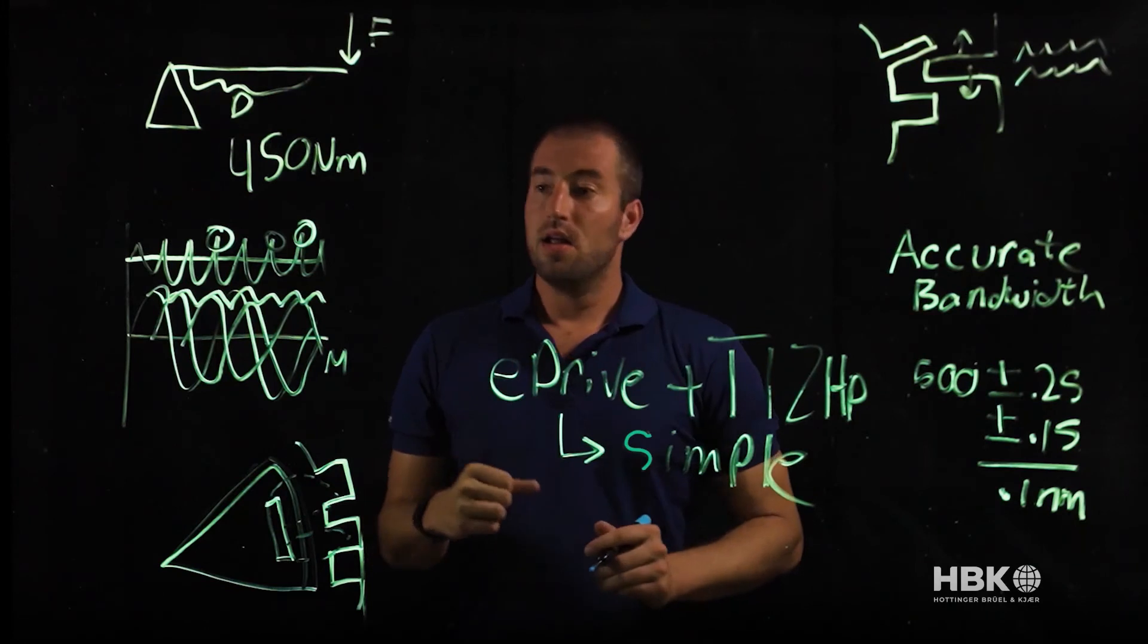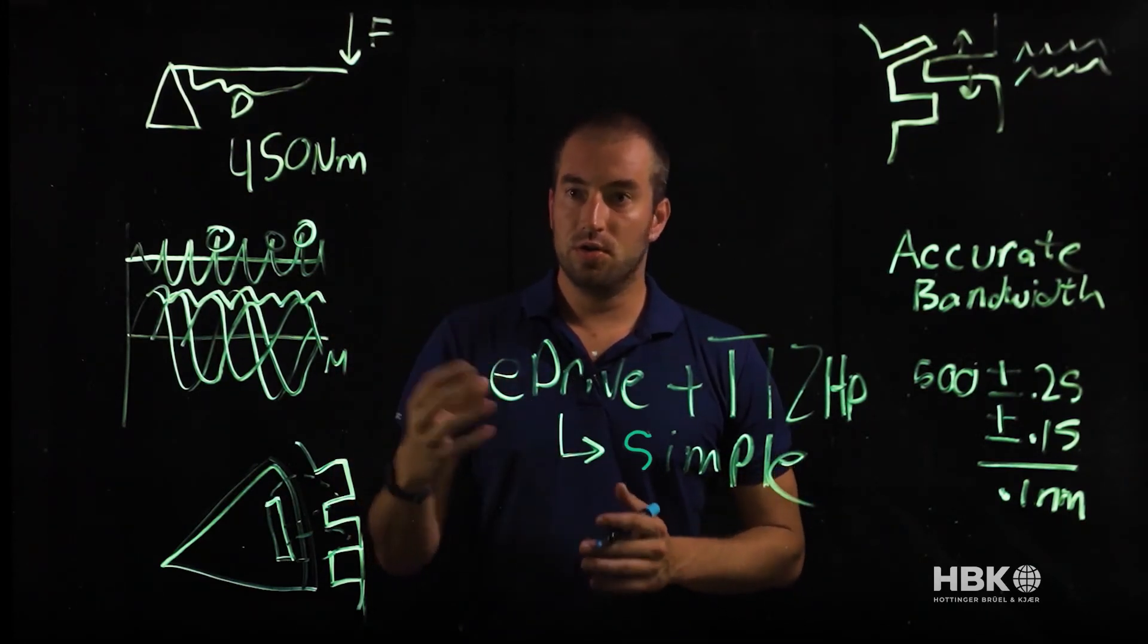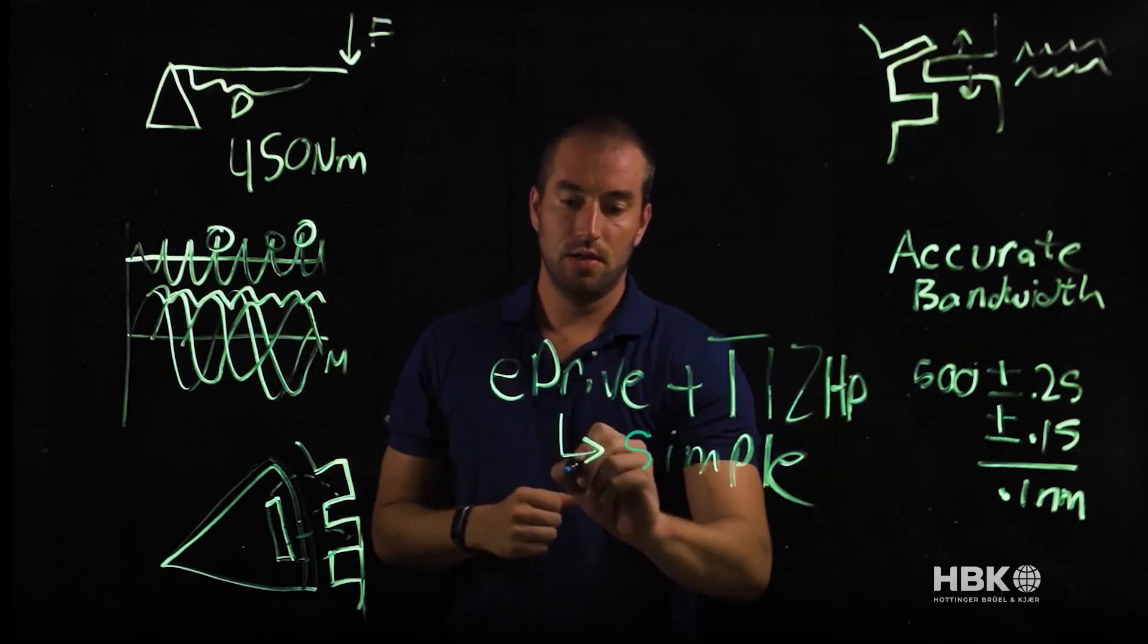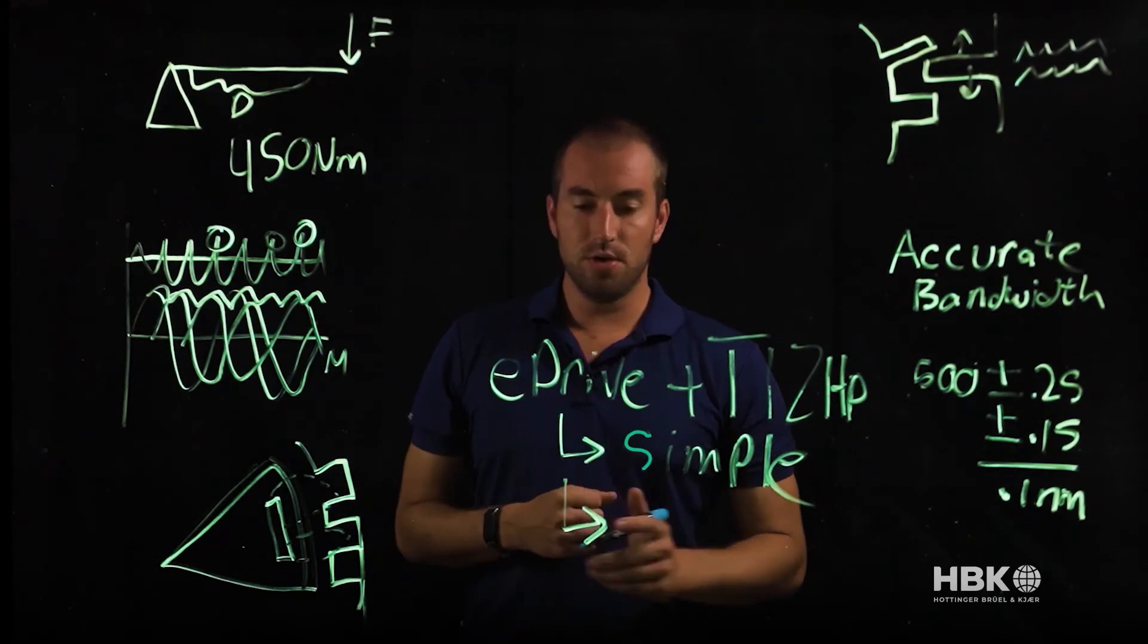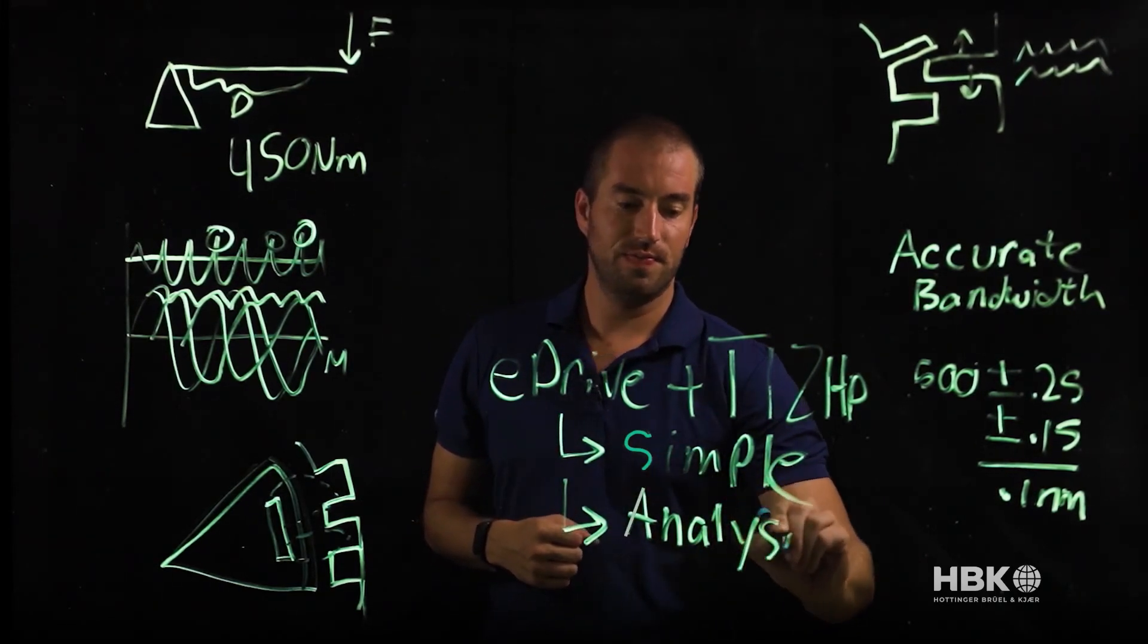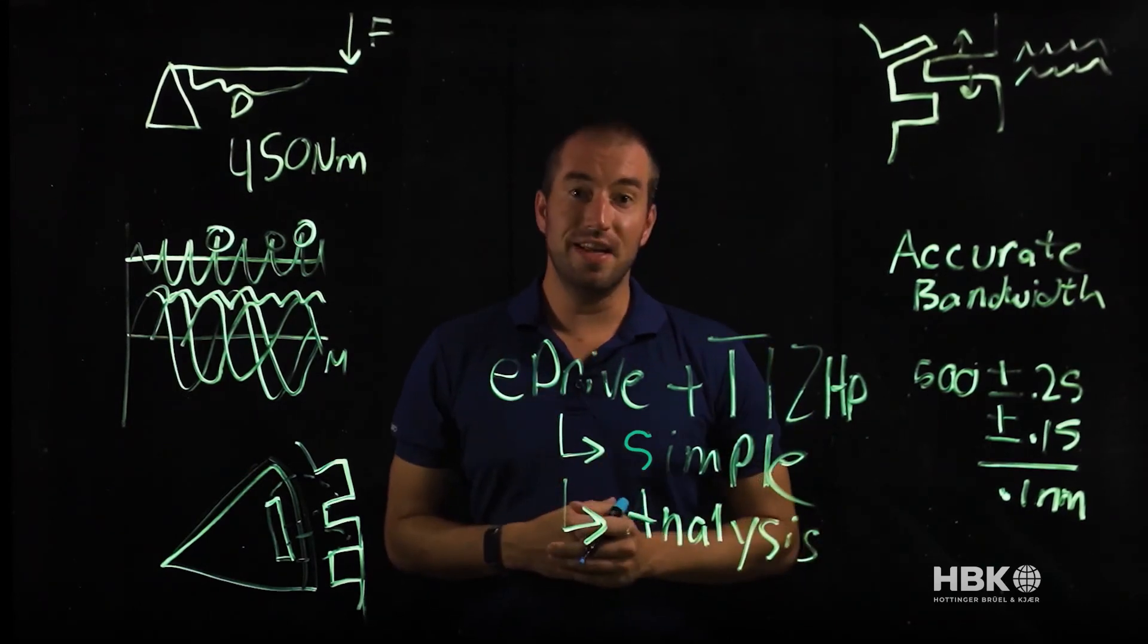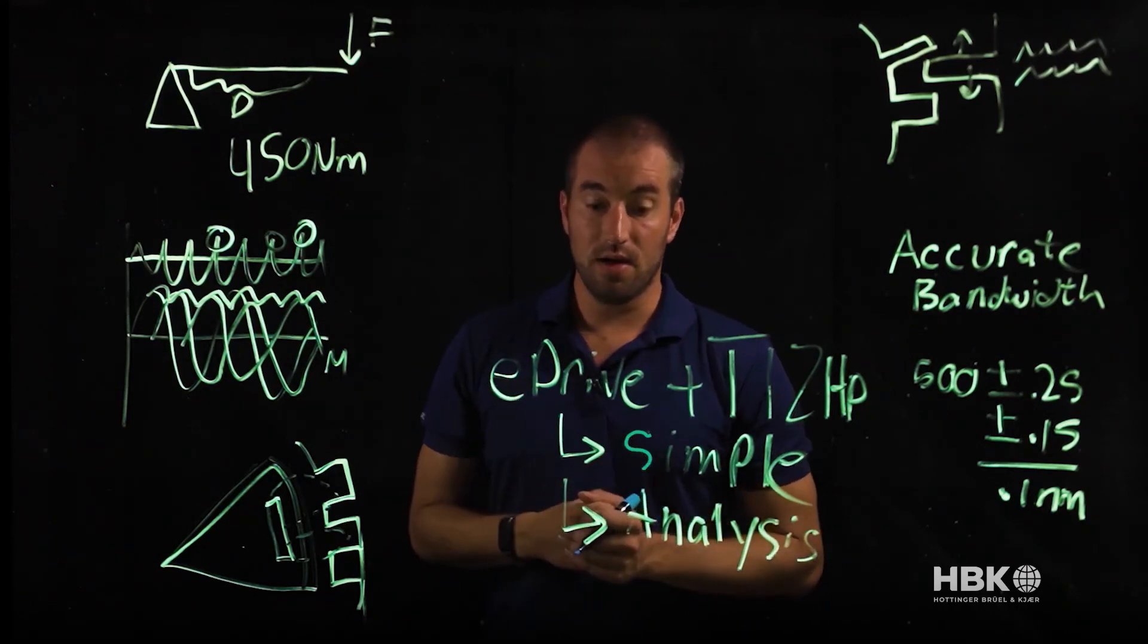Secondly, the eDrive power analyzer records data for voltage, current, torque, and speed continuously so that you can have all of the data for as long as you need to measure so you can do really advanced analysis. You can use this data to figure out what's causing your torque ripple and then identify how to mitigate it.